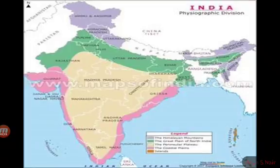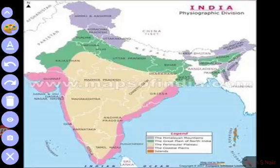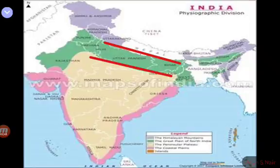The northern boundary of this plain is represented by the Shivalik hills. The plain has a northern boundary at the Shivaliks and a southern boundary, and the entire region is what we call the Northern Plains.